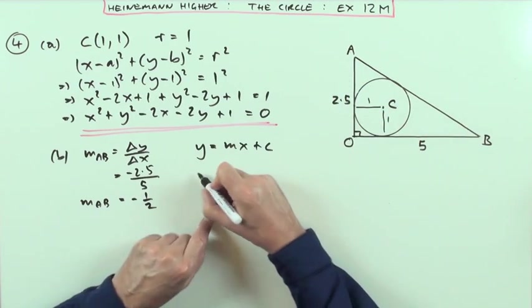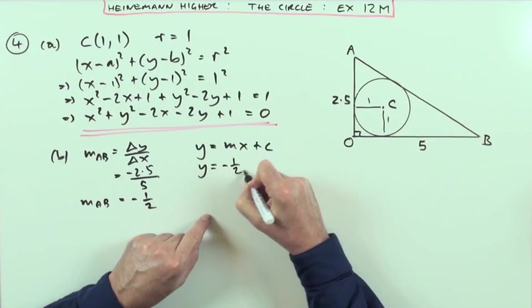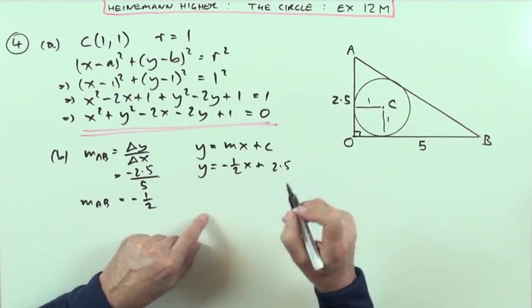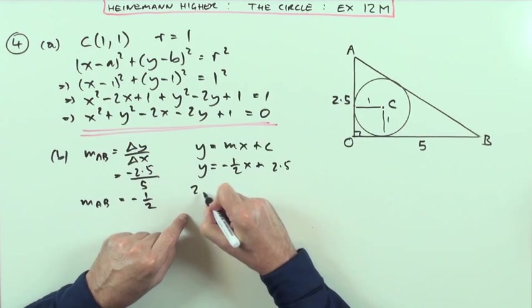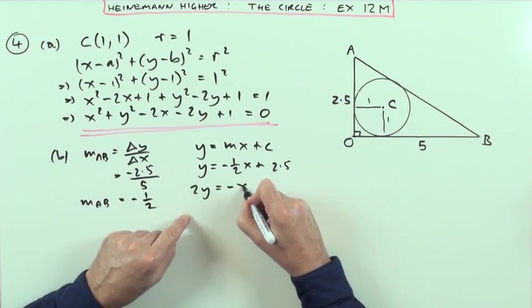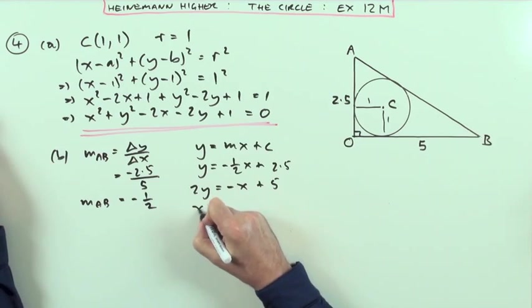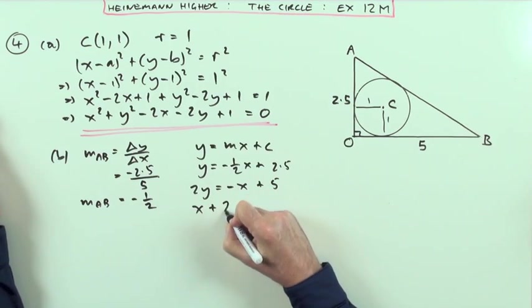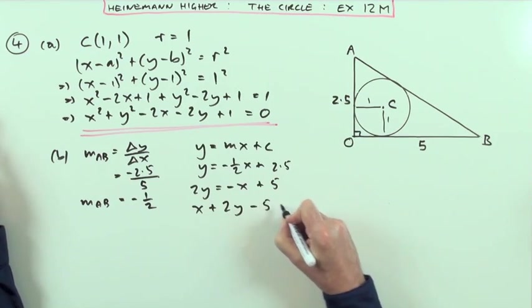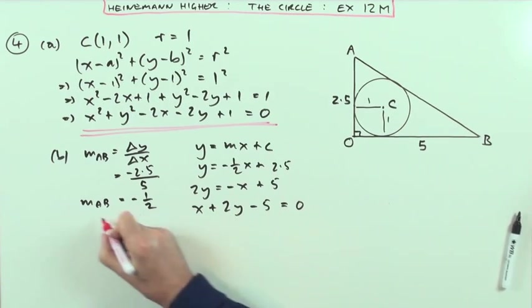I know where it cuts the y-axis, so y equals negative a half x plus 2.5. Or doubling it all up, I've got 2y is negative x plus 5. Any form like that would do - x plus 2y equals 5, or minus 5 equals 0. Any form would do.